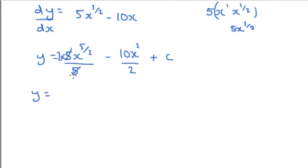The 5s obviously cancel, so we've now got 2x^(5/2) take away... and the 10 and the 2 here can be cancelled to 5x².